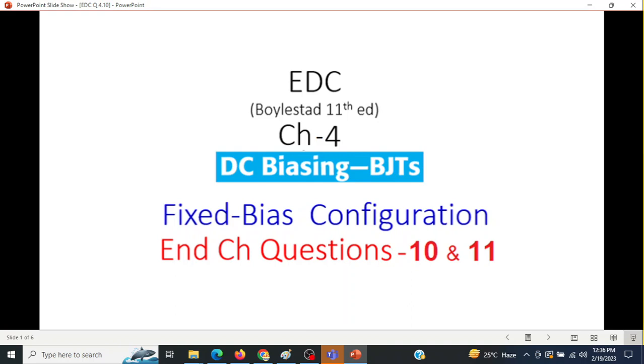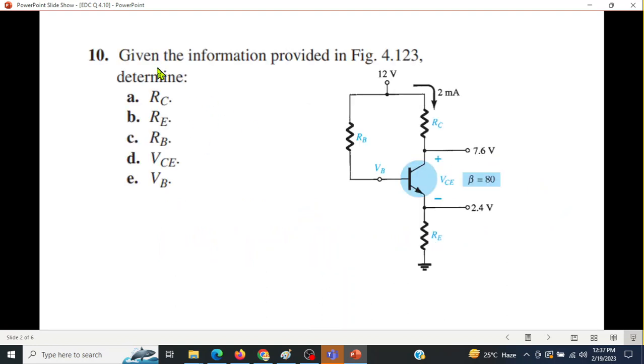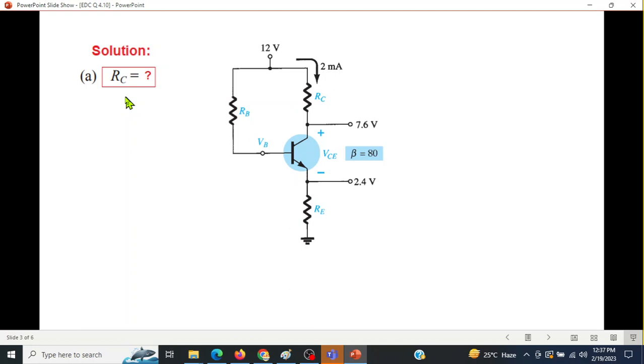This video is from Chapter 4, EDC DC Biasing of BJT, and here we'll be solving end chapter questions number 10 and 11. This is on the request of a student. Straight away on the question, given the information provided in the figure: RC, RE, RB, VCE, and VB, these are the five quantities that we have to determine. The first question is to find RC.